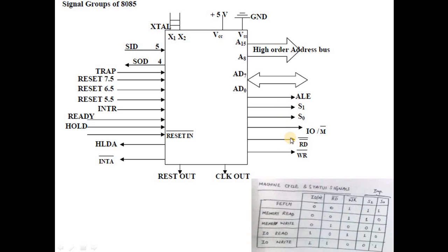Now, the operation table indicates: if IO/M bar is 0, read bar is 0, write bar is 1, this is fetch or memory read. If IO/M bar is 0, read bar is 1, write bar is 0, this is memory write. IO read and IO write are when IO/M bar is 1. You have to remember these tables.